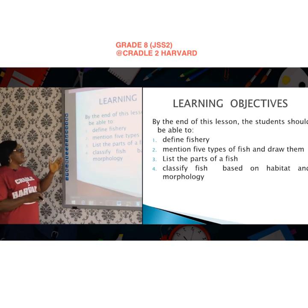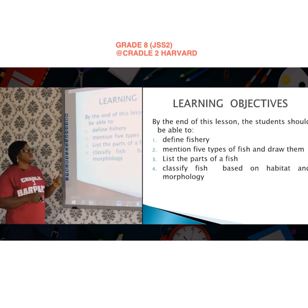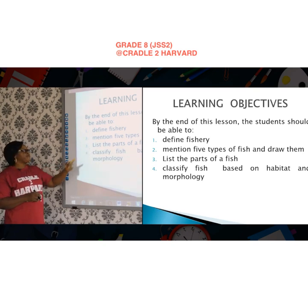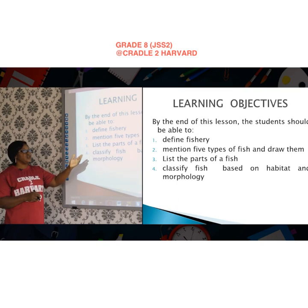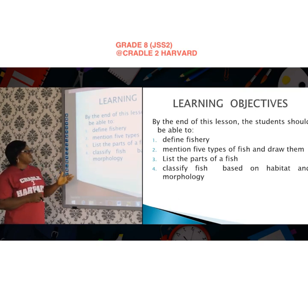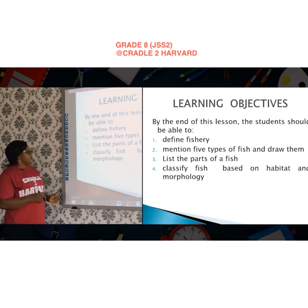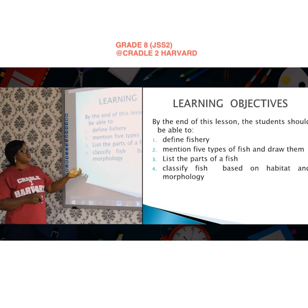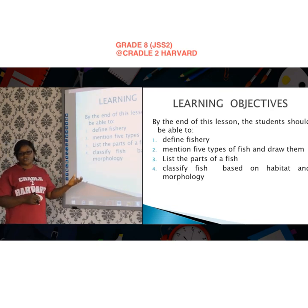By the end of this lesson, you should be able to: number one, define fisheries; number two, mention five types of fish and draw them; number three, list the parts of a fish; and number four, classify fish based on habitats and morphology.